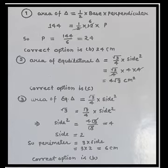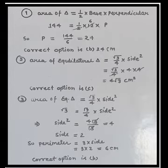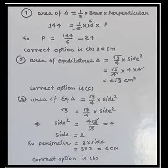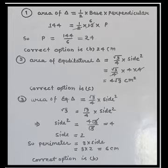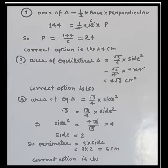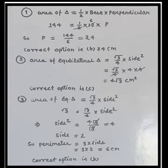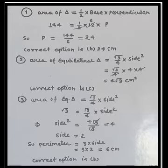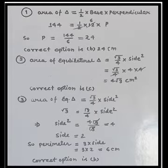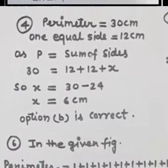Question number 3: area of equilateral triangle is (√3 / 4) × side². The area is given as √3. Placing this value: √3 = (√3 / 4) × side². So side² = 4√3 / √3. The √3 cancels, giving side² = 4, so side = 2 cm. The perimeter of an equilateral triangle is 3 × side = 3 × 2 = 6 cm. Correct option is B.